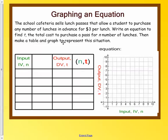So what if we have an equation and it's given from a situation? Let's look at something that's real world like this one. The school cafeteria sells lunch passes that allow students to purchase any number of lunches in advance for $3 per lunch. Write an equation to find T, the total cost to purchase a pass for N number of lunches. And then make a table to graph and represent the situation. So this is your x and this is your y. So $3 per lunch. So three times the number of lunches will give you your y. So y equals 3x.